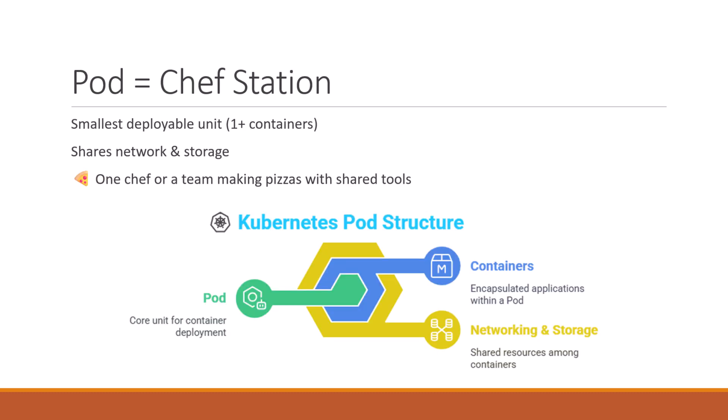Next is the pod. A pod is the smallest unit of work in Kubernetes — it's like a chef station. It might be a single chef making pizza or a small team working on the same dish, and they share the same workspace and tools.